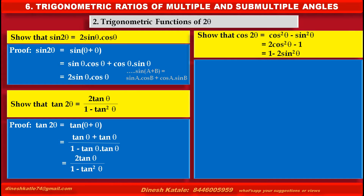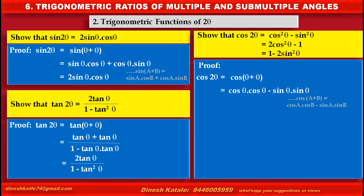Proof. cos 2 theta equals cos theta plus theta, which by using the formula cos A plus B equals cos A into cos B minus sin A into sin B, gives us cos theta into cos theta minus sin theta into sin theta, since values of A and B are both theta. Solving the above step: cos theta into cos theta is cos square theta, minus sin theta into sin theta is sin square theta, which is the first required statement.